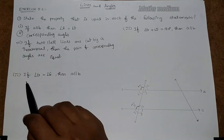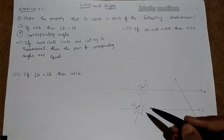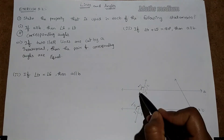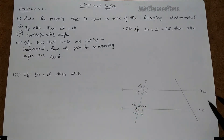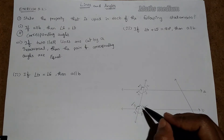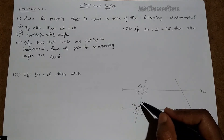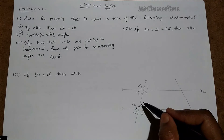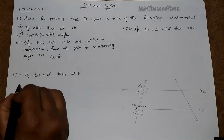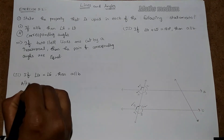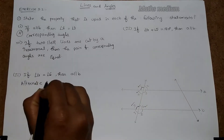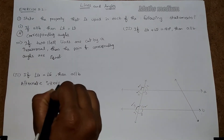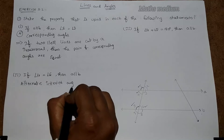Next: if angle 4 equal to angle 6, then A is parallel to B. Angle 4 and angle 6 are equal — these two are alternate interior angles. So this is the property of alternate interior angles.